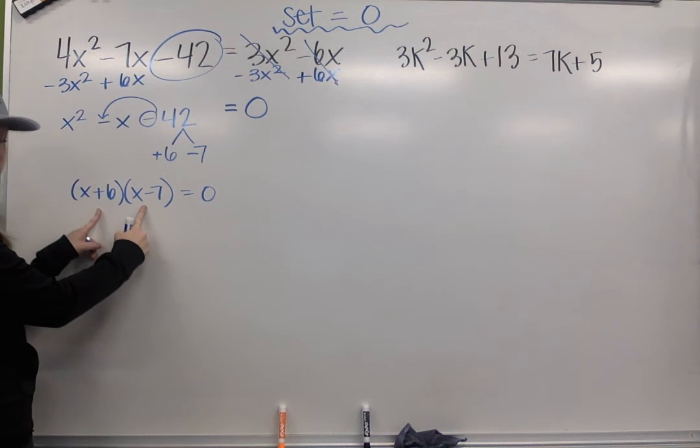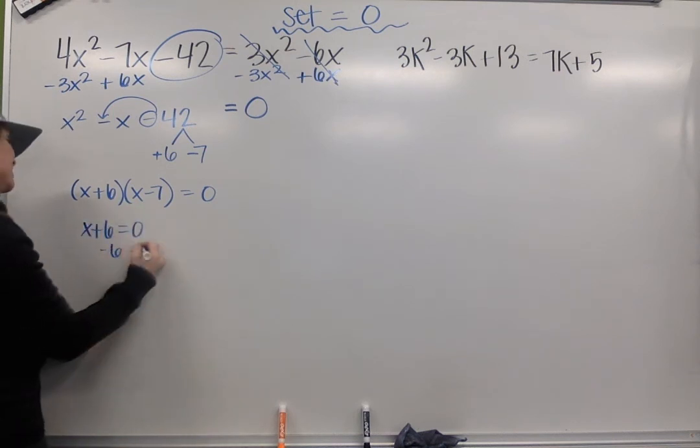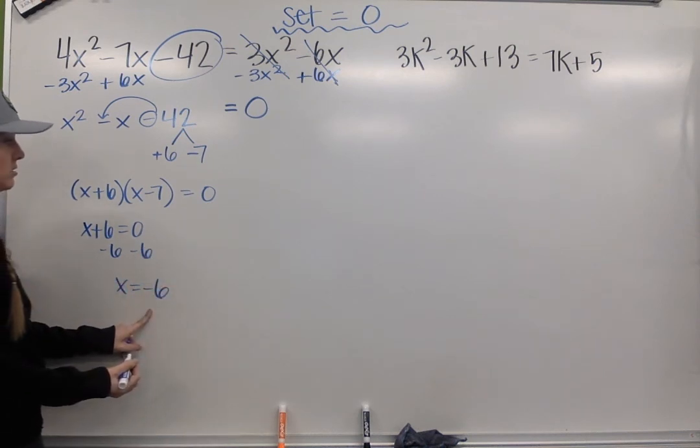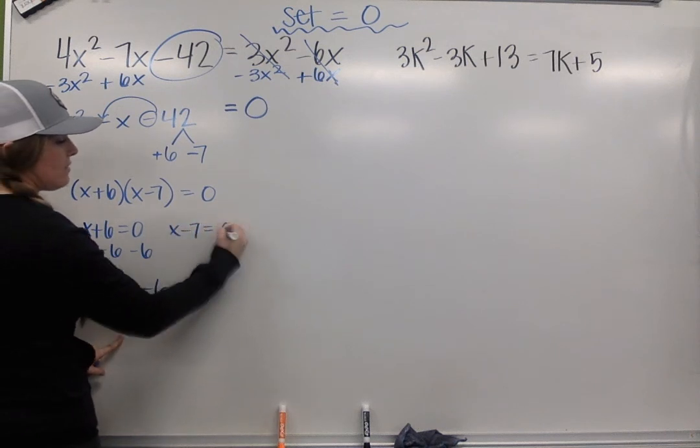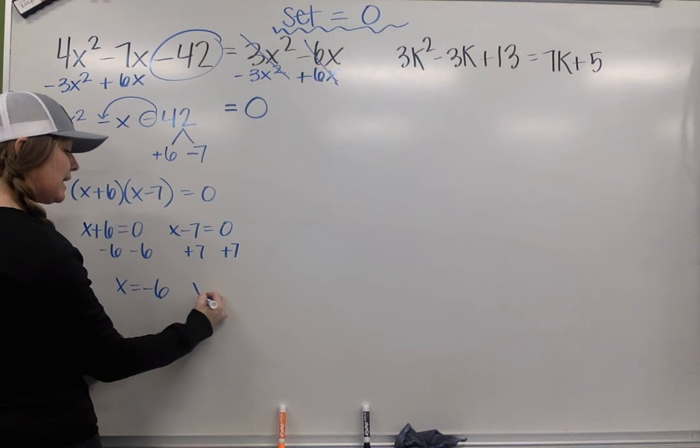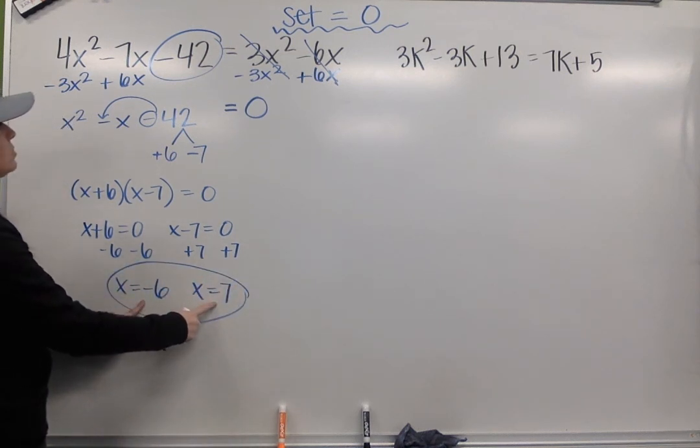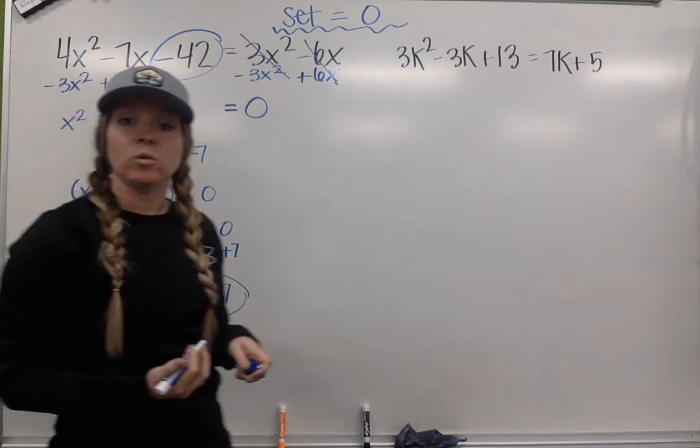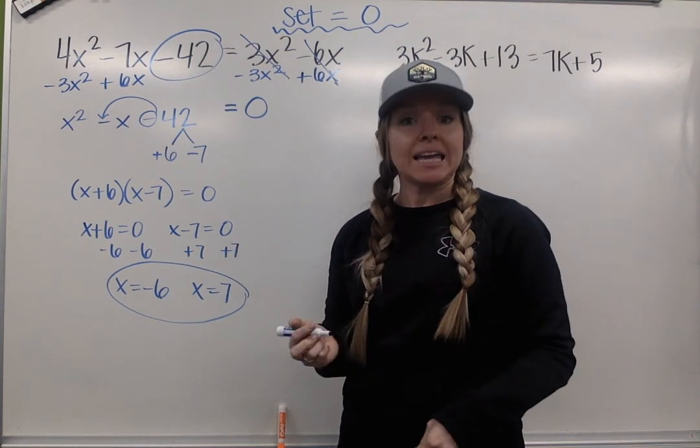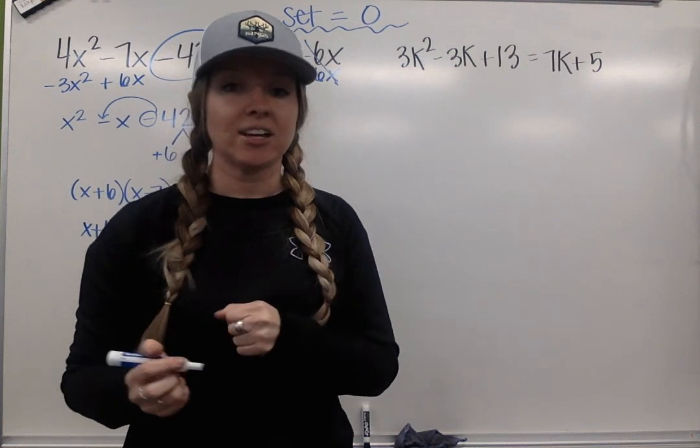We're going to set each factor equal to 0. So x + 6 = 0. Subtract 6 over, and x = -6. Then I take x - 7 and set it equal to 0. Add 7 to both sides, and x = 7. So the two x values that will make my quadratic equal 0 are -6 and 7. Now go ahead and pause. Give this second problem a try, then come back and check how you did.